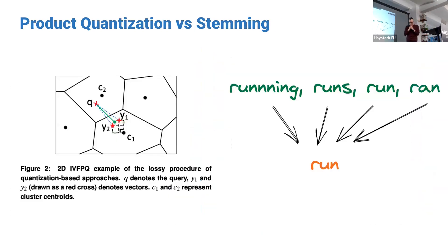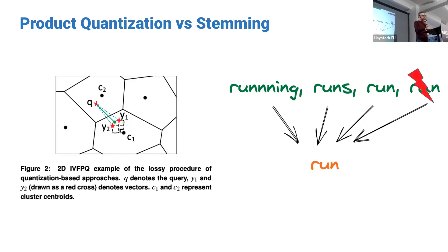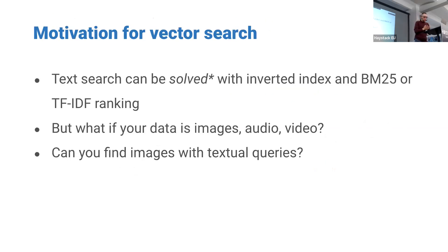Product quantization splits a vector into M buckets — say four — clusters each bucket individually, and loses some precision while gaining storage efficiency. This is somewhat analogous to stemming in sparse search: you increase recall but lose precision. After retrieving vectors via product quantization, a re-ranking step is needed to restore precision. If two objects are very close in space, product quantization may map them to the same point.